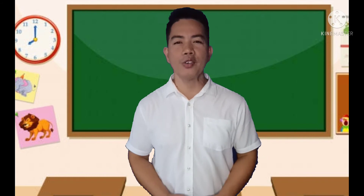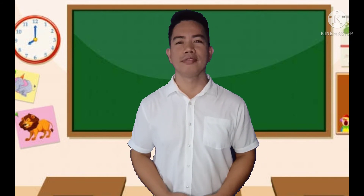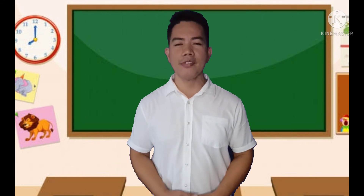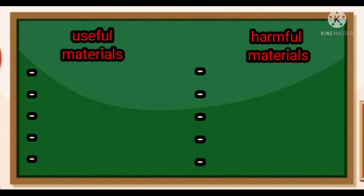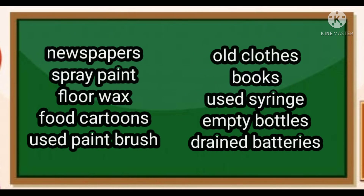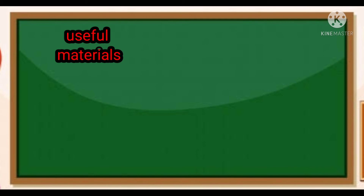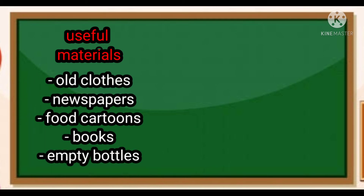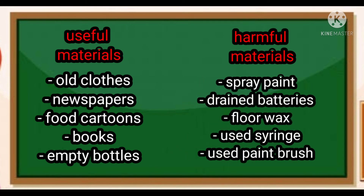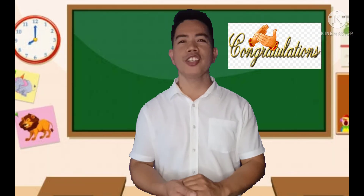Great job! Now you can distinguish the difference between harmful and useful materials. We have here some of the materials found at home and in the environment — classify them and write on the correct table. Useful materials are: old clothes, newspaper, food cartons, books, and empty bottles. Harmful materials are: spray paint, paint thinner, batteries, floor wax, used syringe, and used paintbrush.